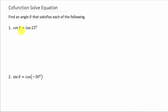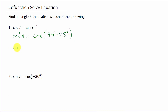So here we have co-tangent theta is equal to tangent of 25 degrees, and we need to figure out what theta is. The co-function identity for tangent is co-tangent of 90 minus the angle, so tangent of 25 degrees equals co-tangent of 90 minus 25, which is co-tangent of 65 degrees. Now we have co-tangent theta equal to co-tangent 65, so theta equals 65 degrees.